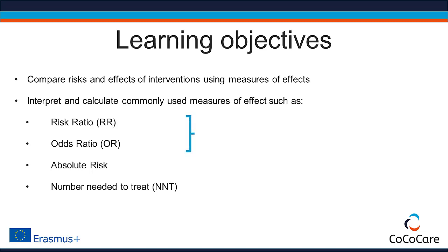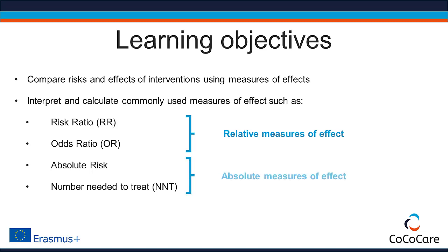Risk ratio and odds ratio are relative measures of effect. They describe how an exposure changes the risks or the odds for an outcome relatively to the risks or odds in the unexposed group. Absolute risk and number needed to treat are absolute measures of effect.